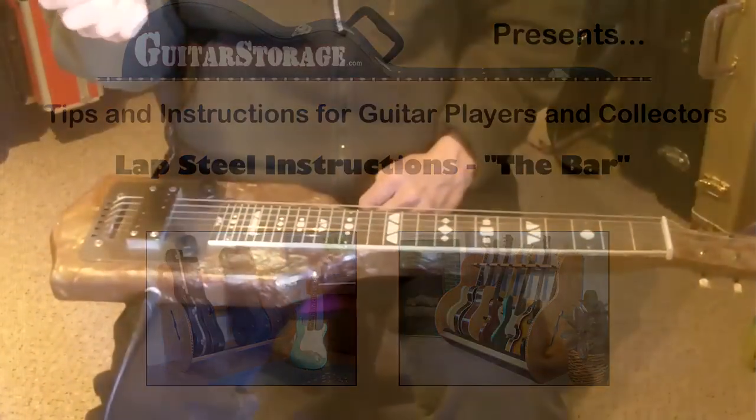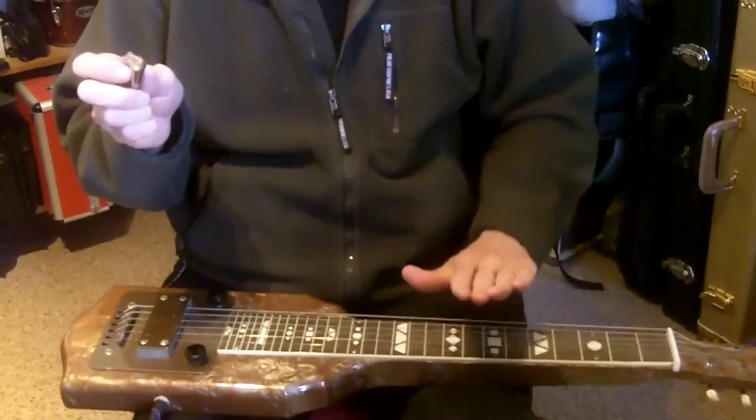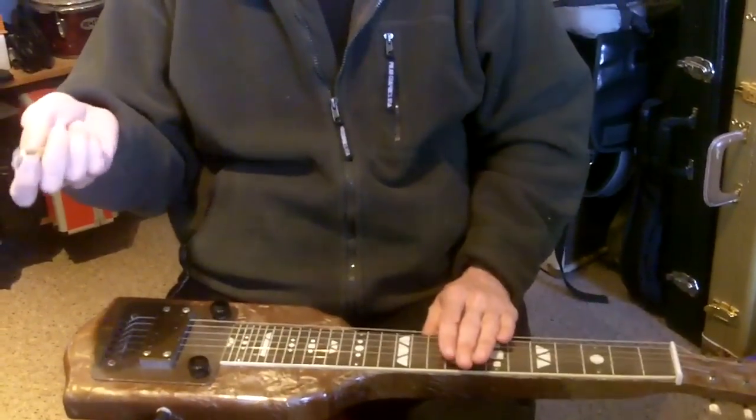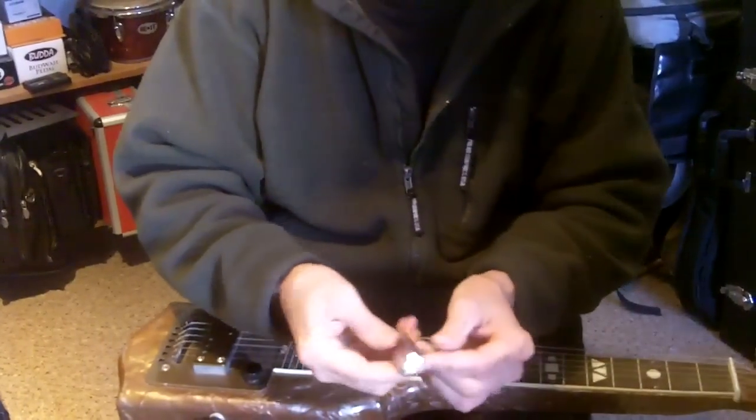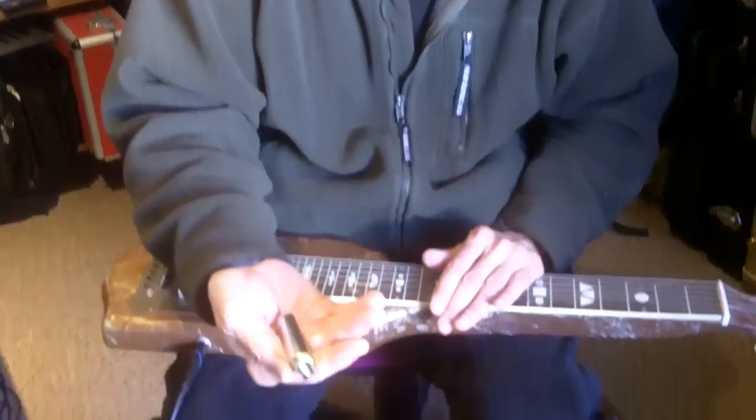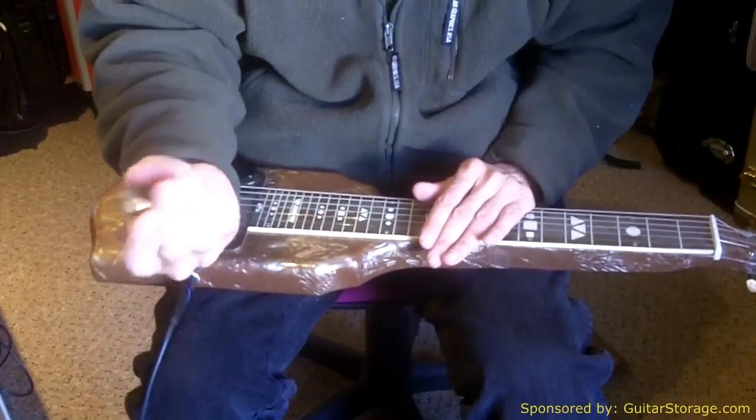One of the essentials in playing the lap steel properly is being able to master the bar. This is the bar. This is a Stevens Steel made by the Stevens Corporation.